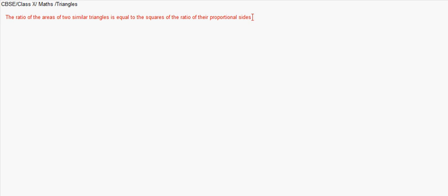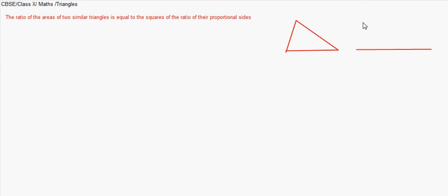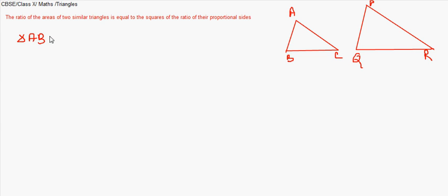To prove this, we will draw two triangles. I name the vertices of the first triangle as A, B, and C, and the second as P, Q, R. We are given these two triangles as similar, so triangle ABC is similar to triangle PQR.